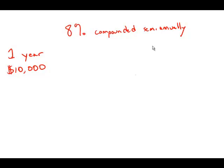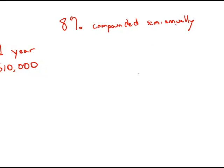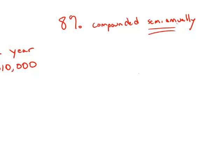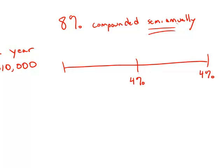First of all, this phrase — an annual rate of 8% compounded semi-annually — what this means is that in the course of the whole year, we take that interest rate and cut it in half. Half of 8% is 4%, and we apply the 4% at two different points in the year: after the first six months and again after the second six months. And it's compounding.